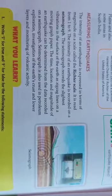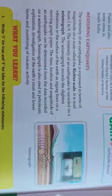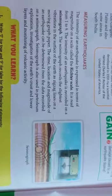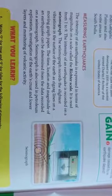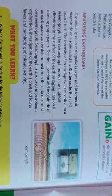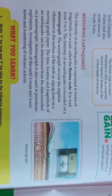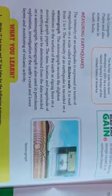The intensity of an earthquake is recorded on a seismograph. The seismograph records the slightest vibration in the surface of the earth as a zigzag line on a moving graph paper. The time, location and magnitude of an earthquake can be determined from the data recorded on a seismograph.